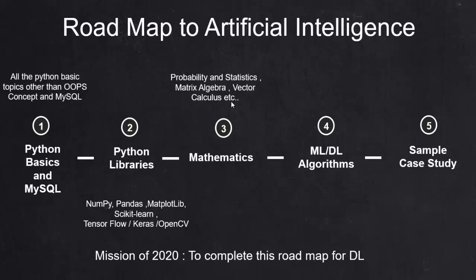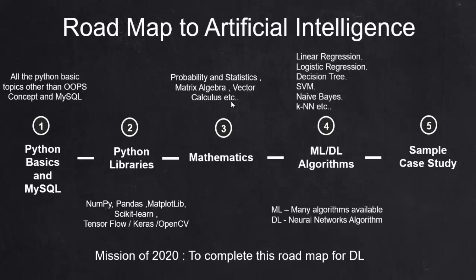Once you complete all these steps, we can start learning the algorithms. For machine learning, we have a wide range of algorithms such as linear regression, logistic regression, decision tree, SVM, KNN, and so on.